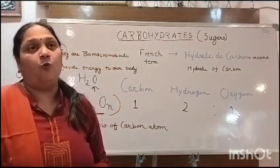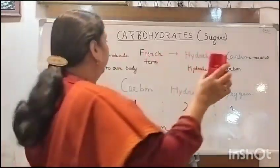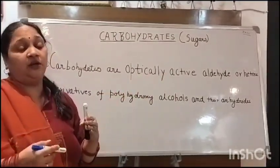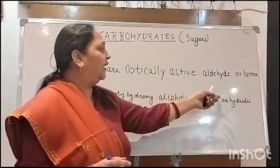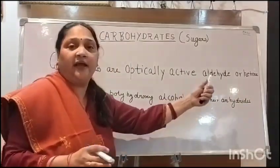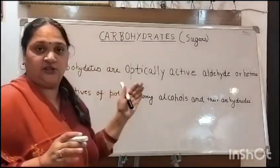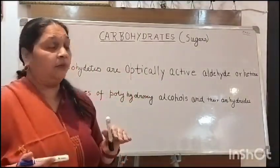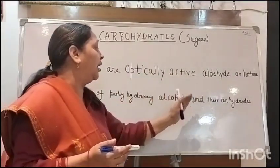Chemically, if we understand what a carbohydrate is — carbohydrates are optically active aldehyde or ketone derivatives of polyhydroxy alcohol and their anhydrides. This is the correct biochemical definition of carbohydrates.